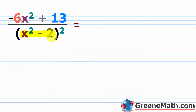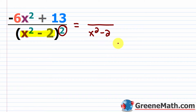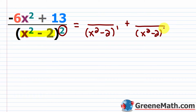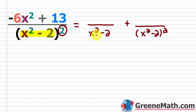When you have a repeated quadratic factor — in other words, this is raised to the second power — what you have to do is build up the power. So I'm going to first write x squared minus two to the first power, and then plus over x squared minus two quantity squared. The big mistake is people just put one term and leave the other off. You have to build up the power.